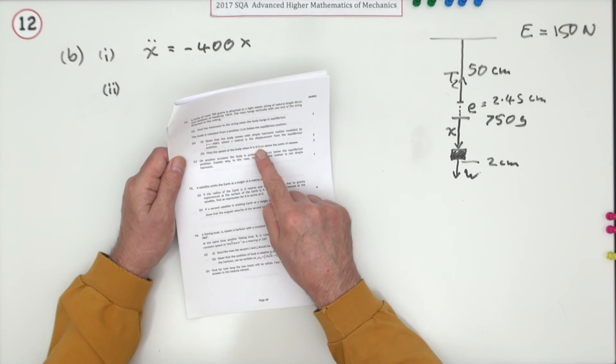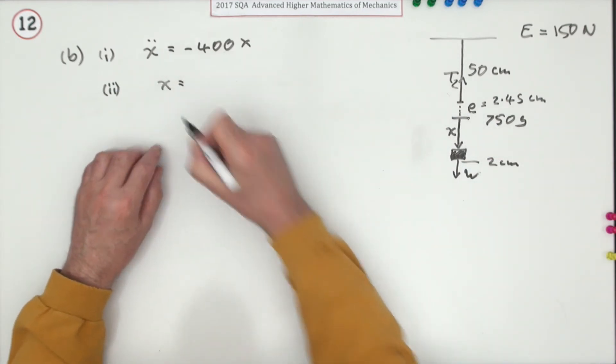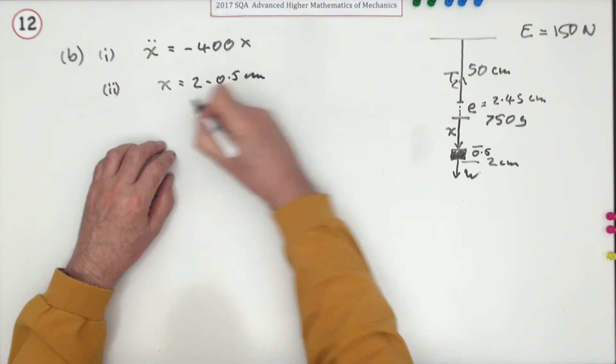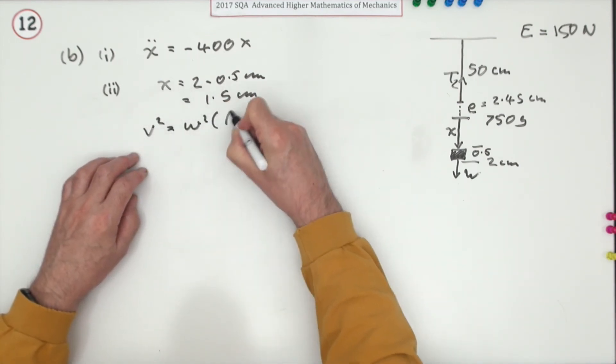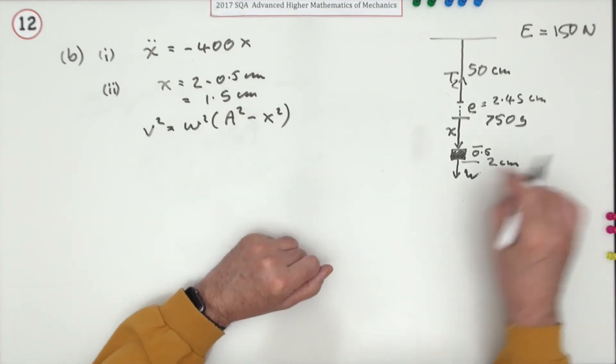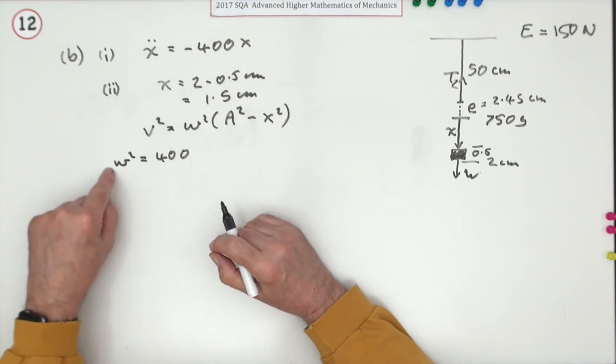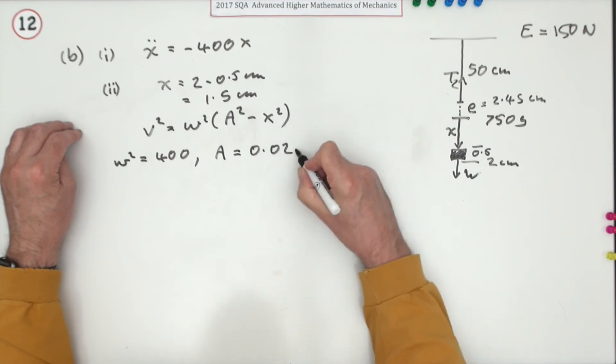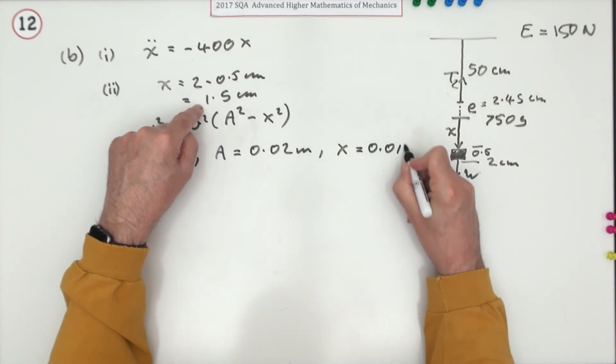Part two: find the speed of the body when it's 0.5 centimeters above the point of release, for two marks. There's the point of release two centimeters below the equilibrium mark, and the equilibrium mark is where x is measured from. So x isn't going to be 0.5, x will be 2 minus 0.5 which is 1.5 centimeters. To find the velocity you use the formula v squared is omega squared a squared minus x squared, where a is the amplitude which is obviously 2 in this case. Omega squared was 400, a is 0.02 meters, and x is 0.015 meters.